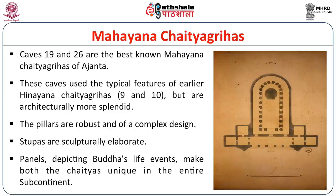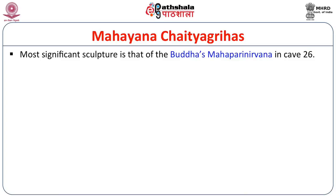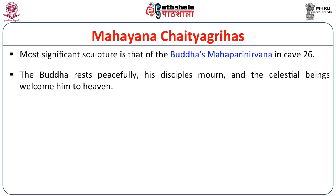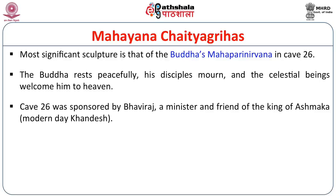Caves 19 and 26 are the best known Mahayana Chaitya Grihas of Ajanta. These caves use the typical features of the earlier Hinayana Chaitya Grihas but are architecturally more splendid — the pillars are robust and of complex design, and the stupas are structurally elaborate. The most significant sculpture is that of Buddha's Mahapari Nirvana in Cave 26, where Buddha rests peacefully, his disciples mourn, and celestial beings welcome him to heaven. Cave 26 was sponsored by Bhaviraj, a minister and friend of the king of Ashmaka (modern-day Khandesh). A unique feature of this cave is the presence of three entrances from the veranda to the main hall.